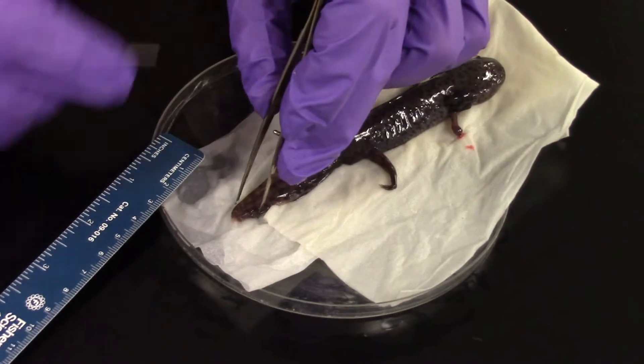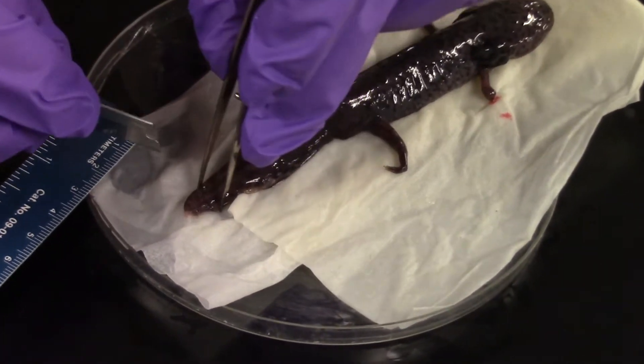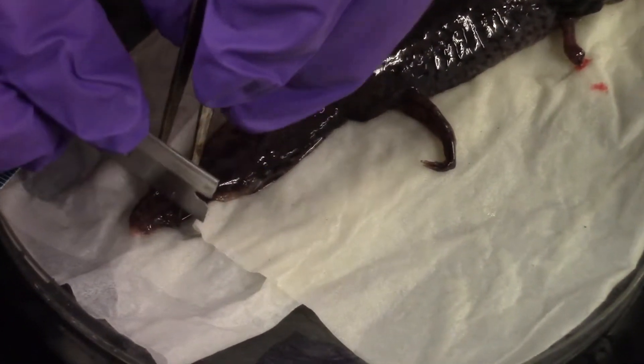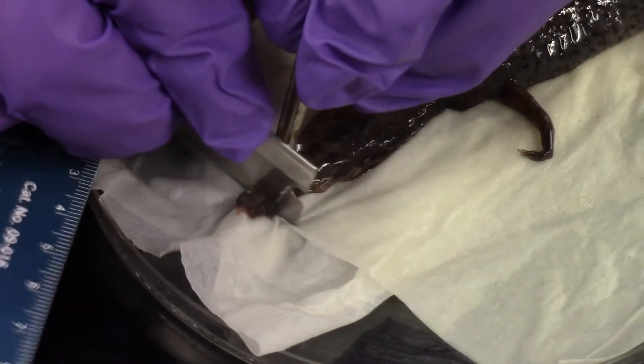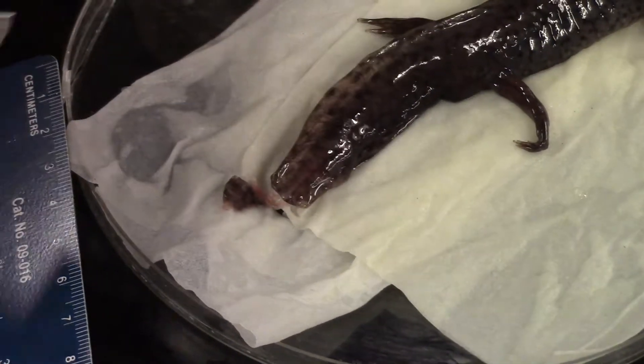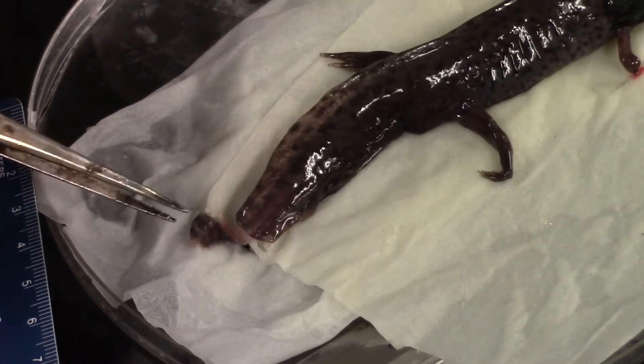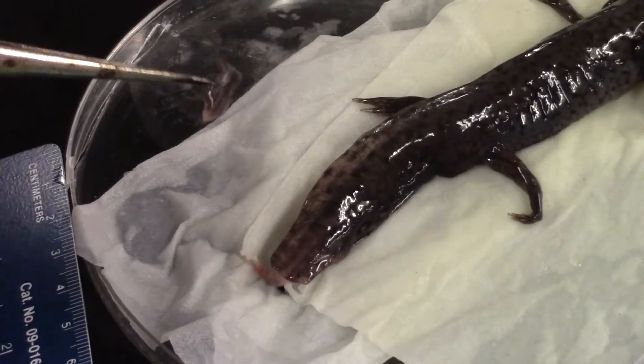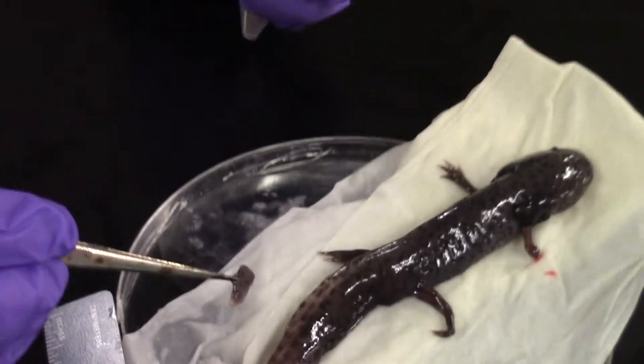So again, I'm going to hold either side with the forceps and cut right through. I'll add this piece of tail to the exact same paraformaldehyde.